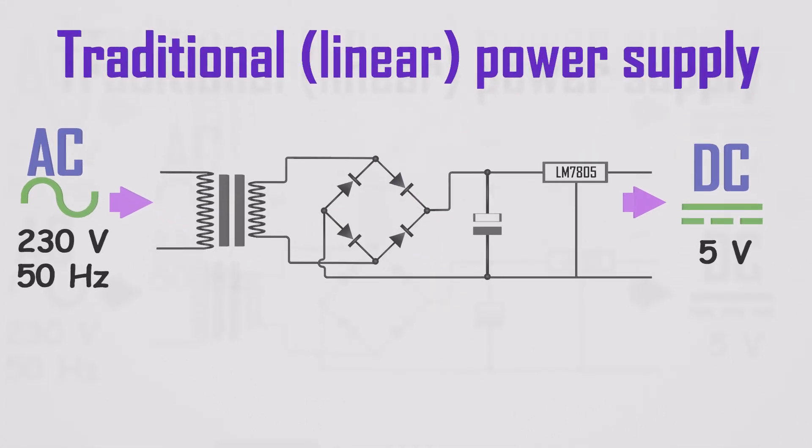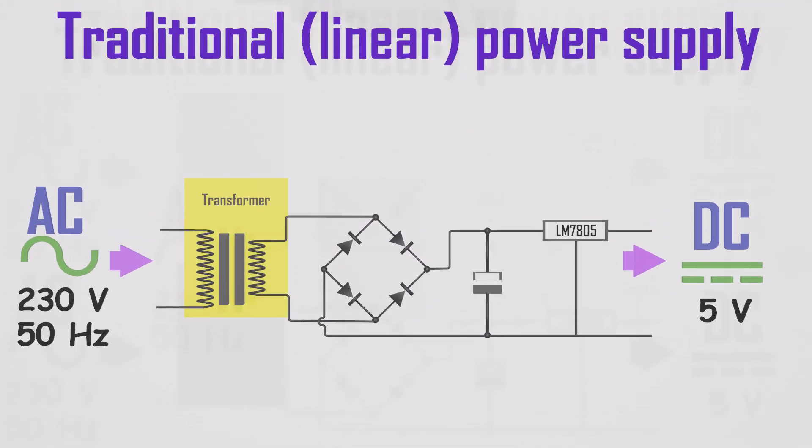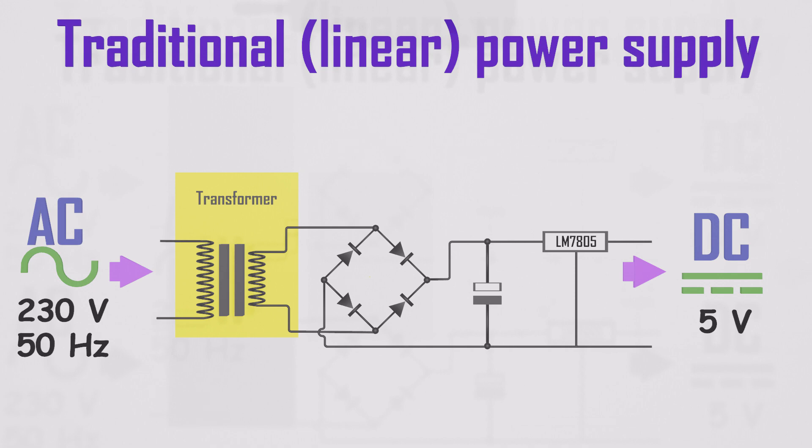The traditional way to convert AC to DC is to use a linear transformer to step down the voltage to the desired level, then convert the AC to DC using a bridge rectifier. Then smooth the output using a capacitor. Finally, use a regulator to get exact DC voltage.